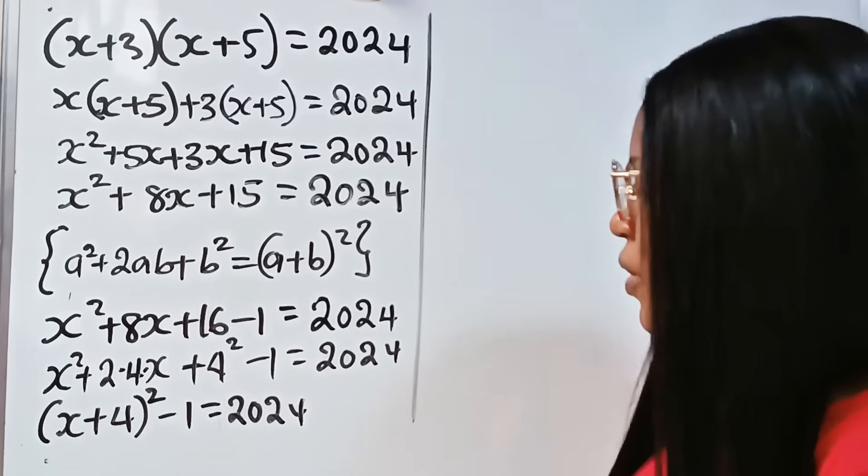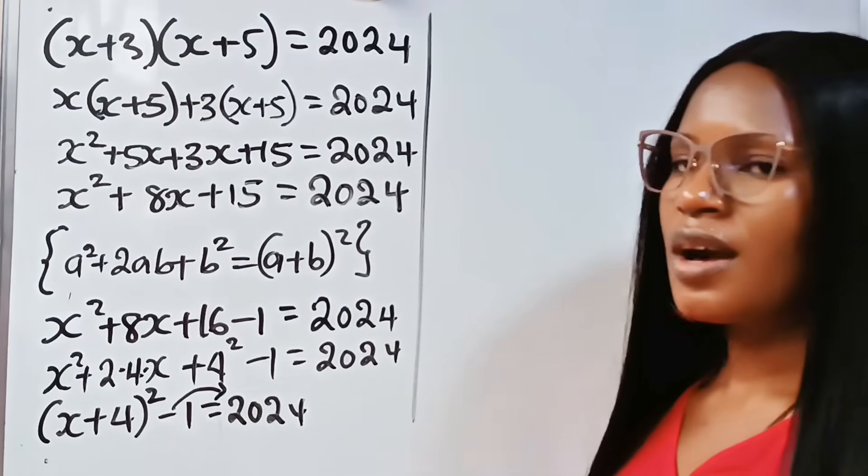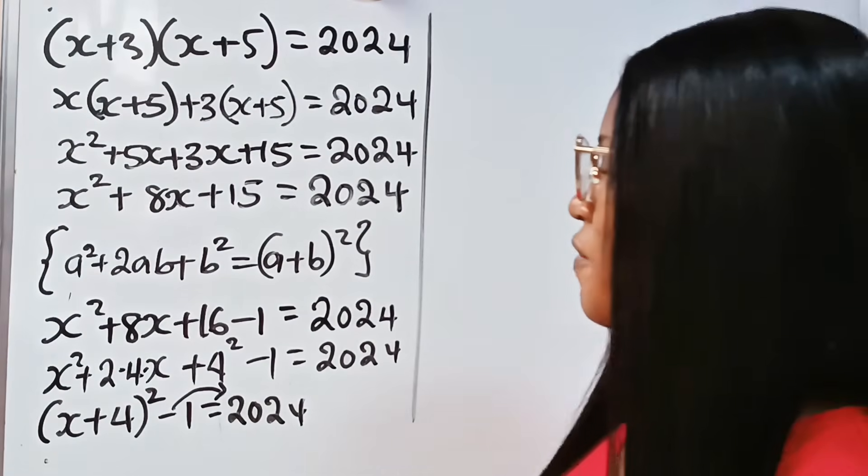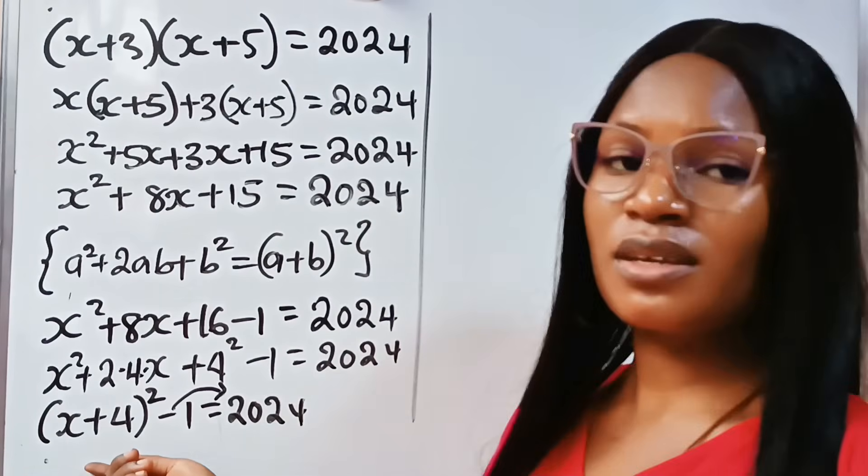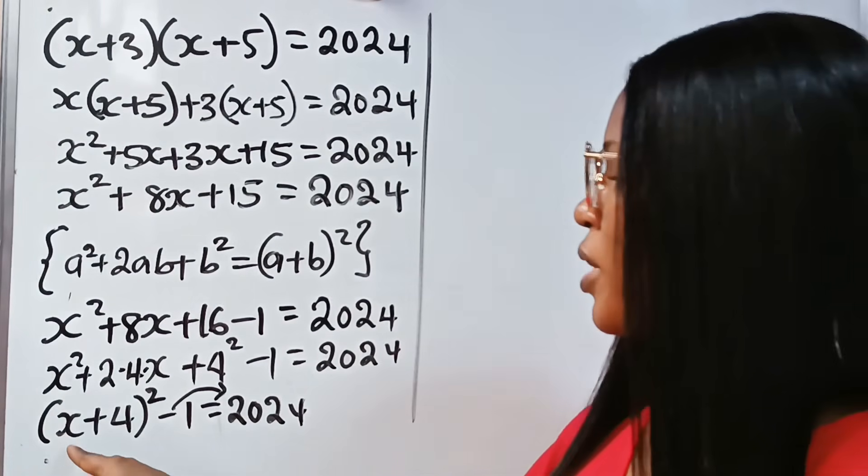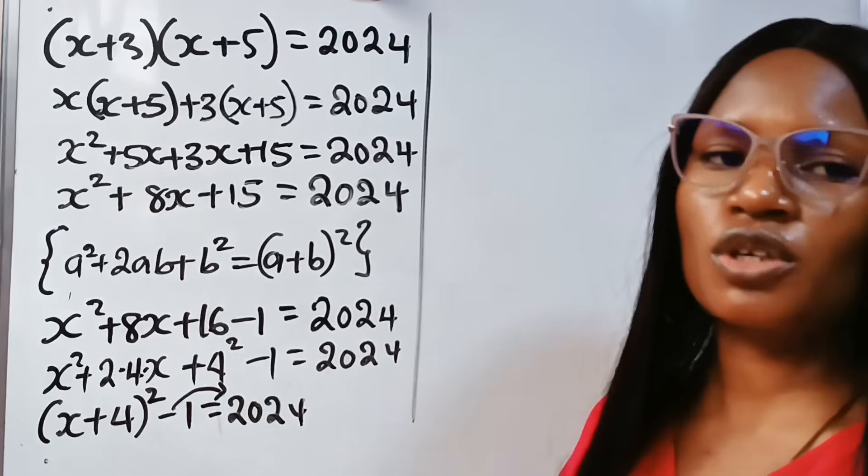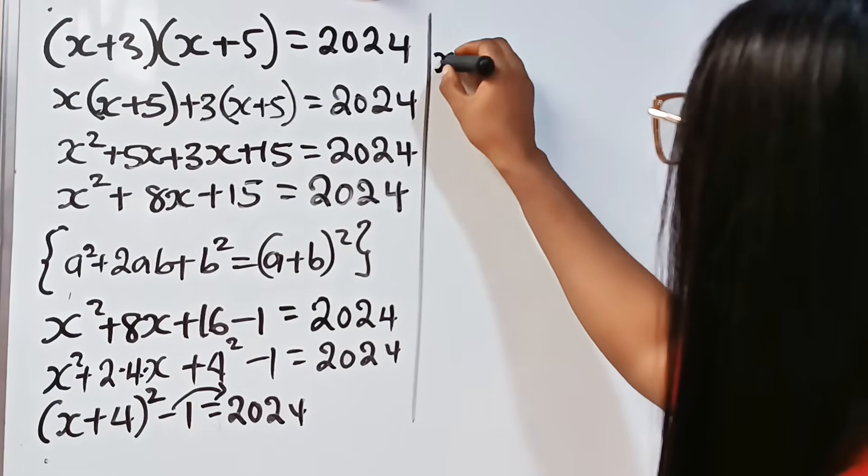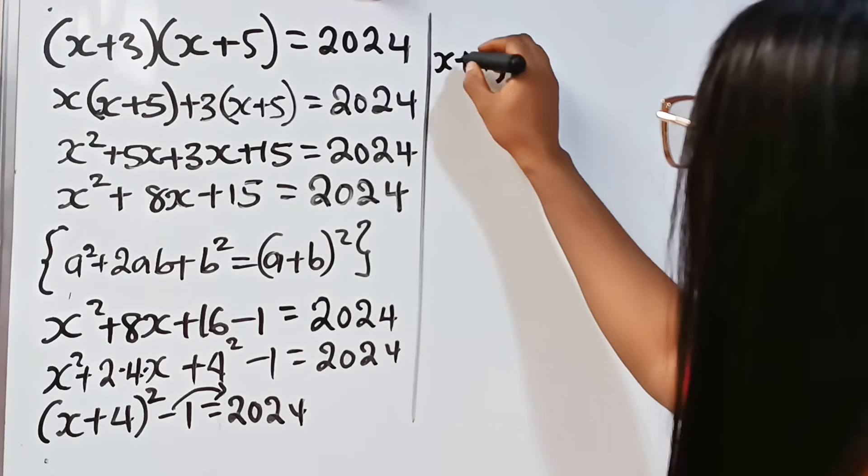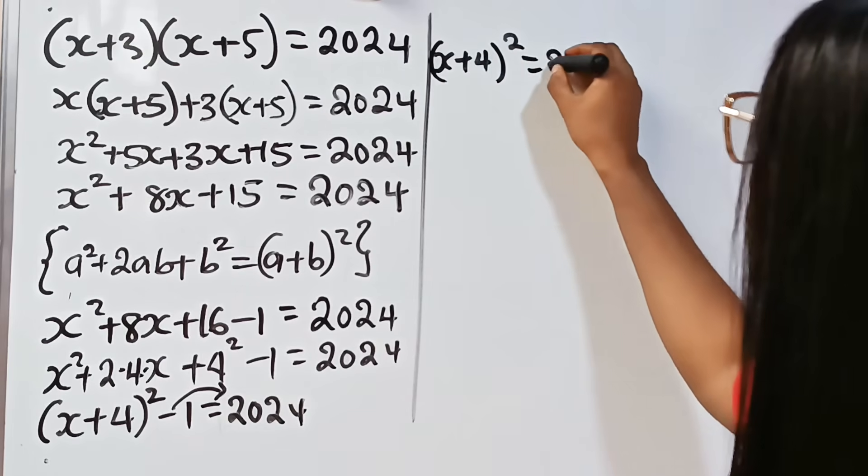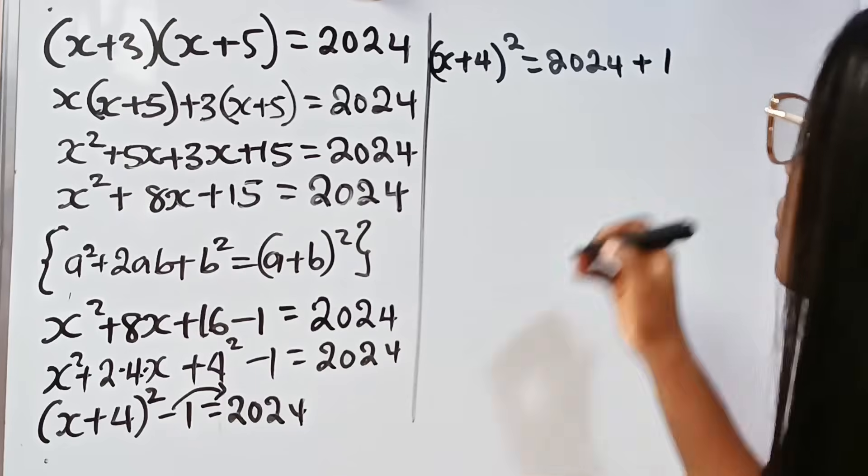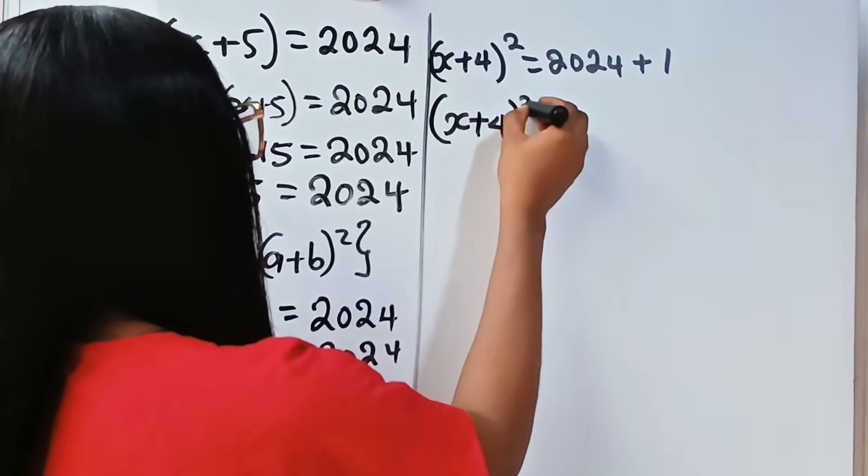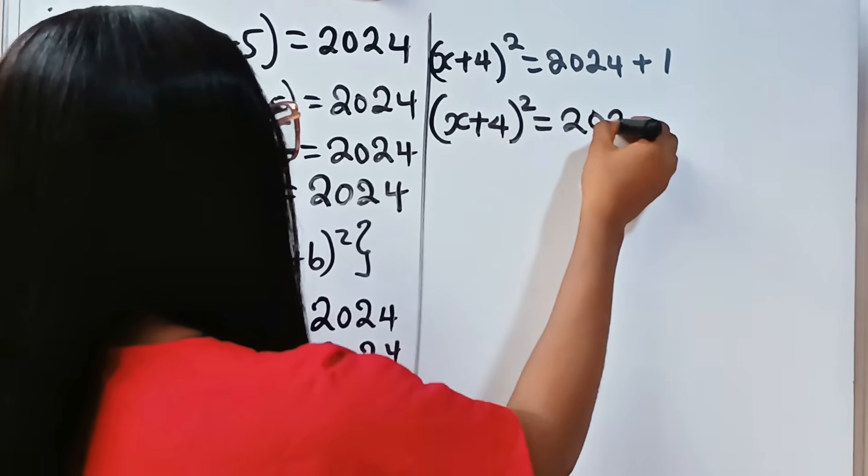Back to what we're doing. At this point, I would rather shift this to the other side, leaving my square alone. If I take the square root, it will help me get to x without obstruction. So (x + 4)² = 2024 + 1, which means (x + 4)² = 2025.